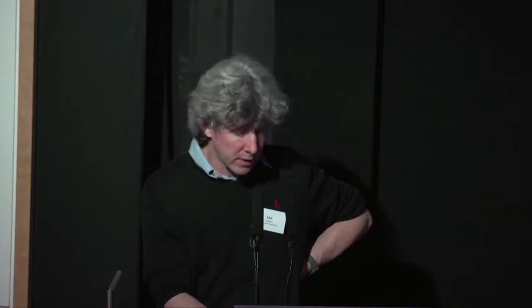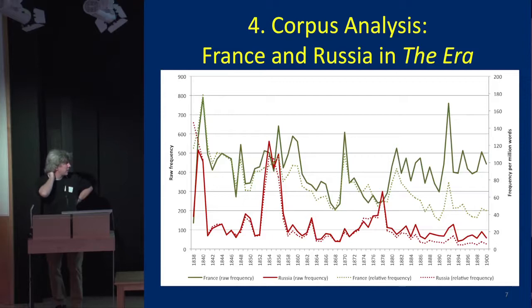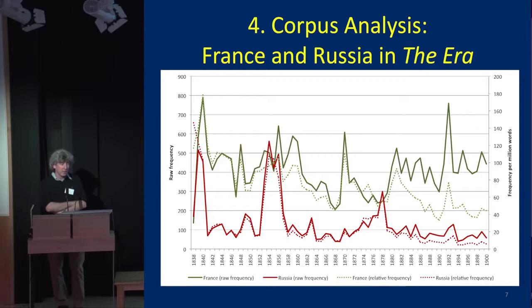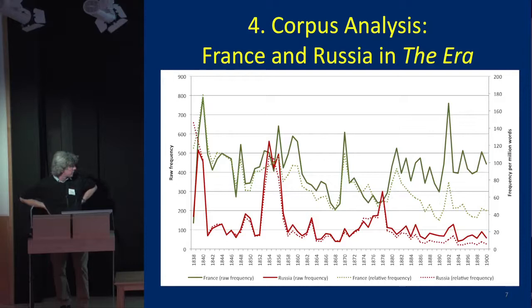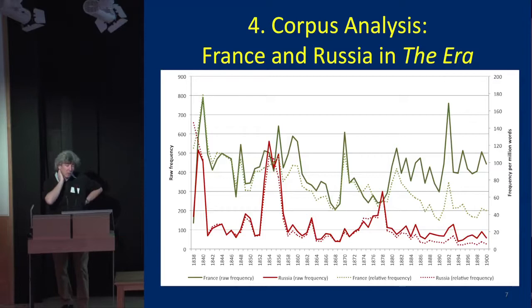As a geographer by training, I'm really interested in what's being said about different places and how that changes over time. This is a simple example looking at two countries — France and Russia — in one newspaper, The Era, published between 1838 and 1900. The green line shows mentions of France, with the dotted line being relative frequency; the red lines are Russia. Those spikes tend to coincide with major political or military crises like the French Revolution, the Franco-Prussian War, the Russo-Turkish War, etc. — generating a hypothesis that interest in these places is being driven by war and upheaval.